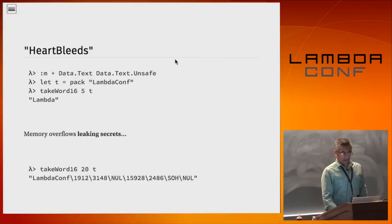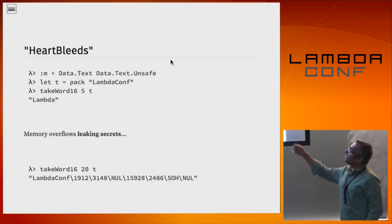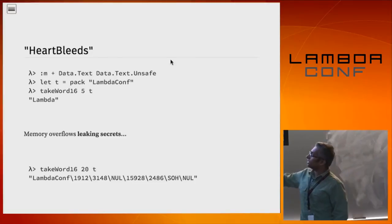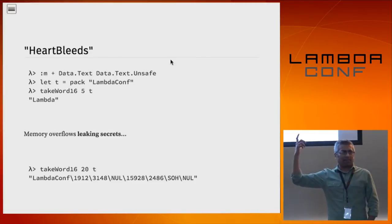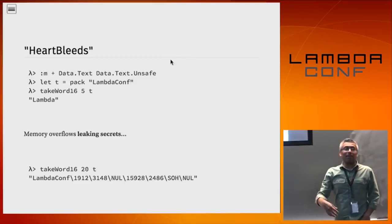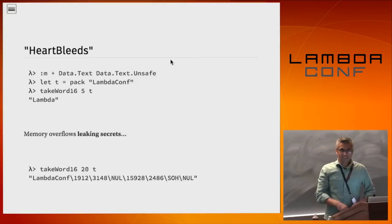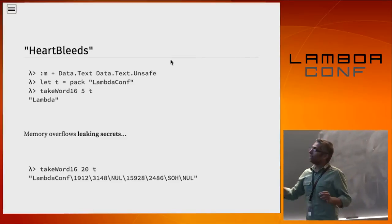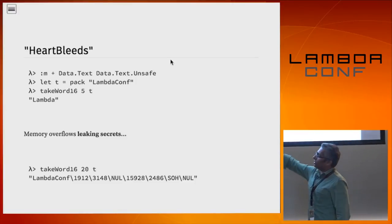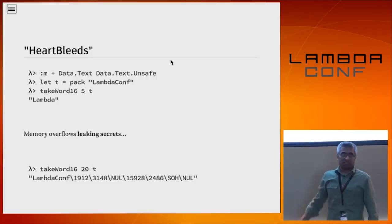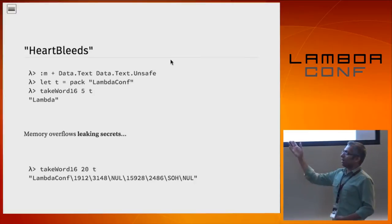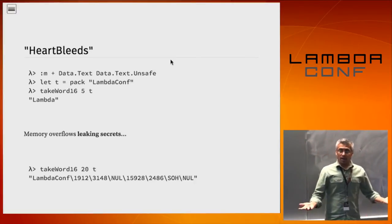For example, you could try this at home. Load up Data.Text.Unsafe, create a little string, and suck out prefixes. If I pull out the first five characters, I get 'lambda'. But if I try to pull out 20 characters, it works just fine, because Data.Text is built on top of C and manipulates a bunch of pointers — it just happily reads the next seven bytes after the buffer where 'lambdaconf' was placed in memory. This is how you get Heartbleed-type errors in high-level languages.